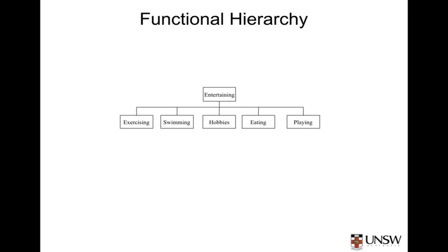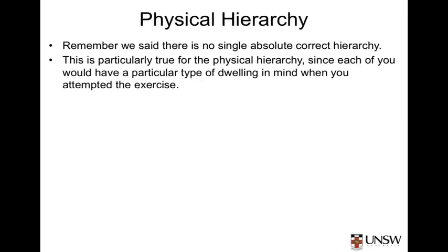Let's look at some examples of an appropriate physical architecture. Remember, there is no absolute correct hierarchy, and this is particularly true for the physical hierarchy, since it's here where the owners start to have a preference for how their house will look — in other words, how the functions they're looking for are going to be implemented in their physical house. It follows that every one of us, starting with the same functional description, would end up with a different preferred physical architecture, because it's all a matter of taste. So each of you would have a particular type of dwelling in mind, and therefore a quite different physical architecture in your solution.